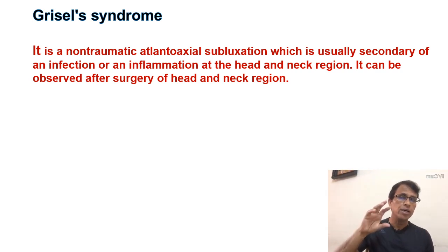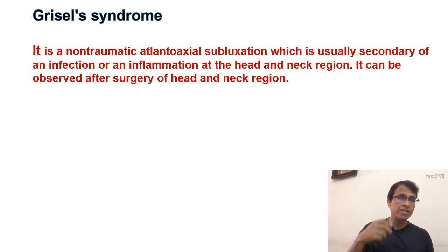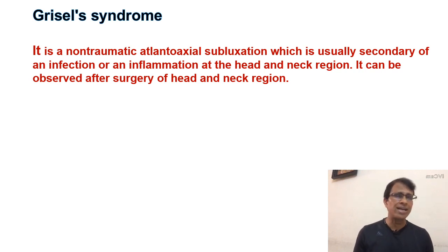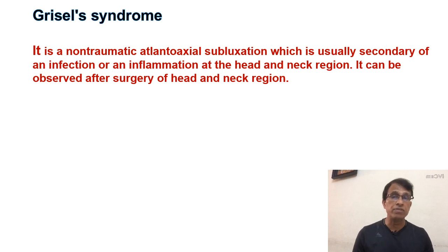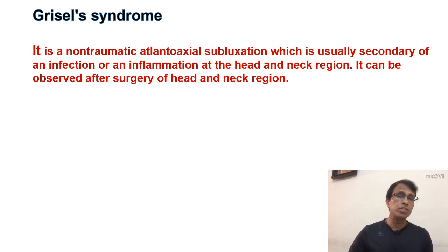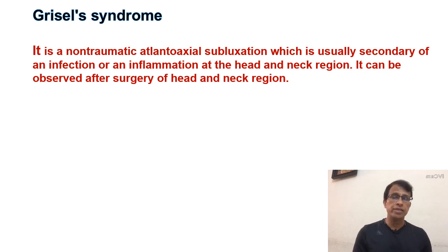The adenoid is located in the posterior superior wall of the nasopharynx, just in front of the atlanto-axial joint. The infection and inflammation from the adenoid can easily travel through the tissue and cause damage or weakness of the ligaments in that area, causing subluxation of the joint. The second important cause is surgery in this area — especially adenoidectomy and tonsillectomy. The surgical inflammation can also travel through the tissue and cause ligament damage and subluxation of the joint.